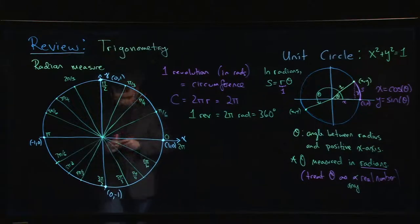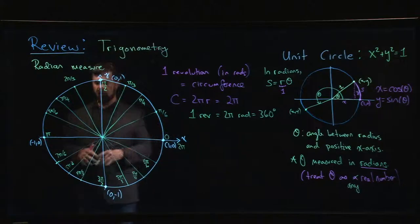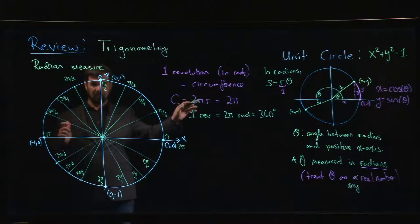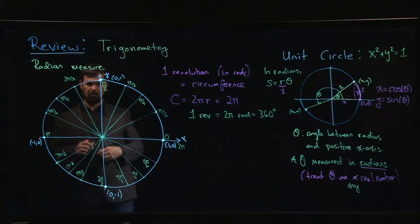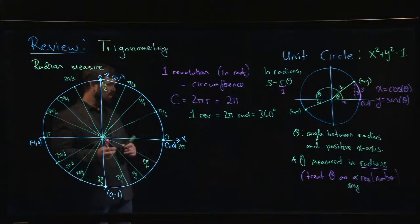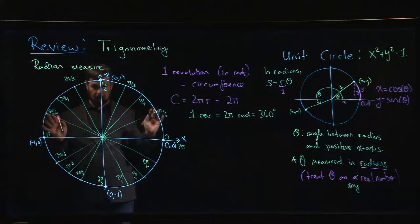That completes your unit circle. Now of course there are lots of other angles that you could mark. The reason that I've gone with these ones is that these are the angles for which we can compute exact values for the sine and cosine functions. A lot of people get concerned because we've marked so many angles around the circle. 'Oh my god, I'm going to have to memorize all these things.'